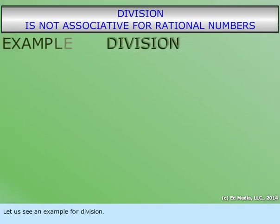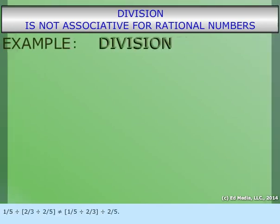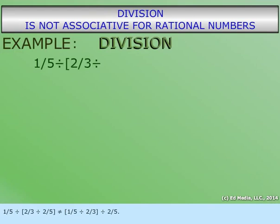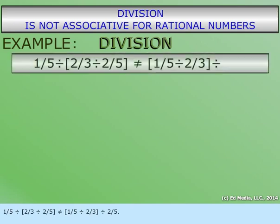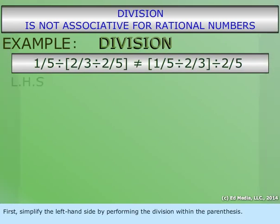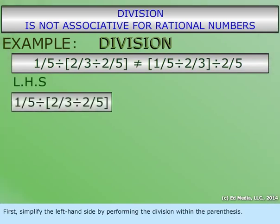Let's see an example for division. One-fifth divided by the quantity of two-thirds divided by two-fifths is not equal to the quantity one-fifth divided by two-thirds divided by two-fifths. First, simplify the left-hand side by performing the division within the parentheses.